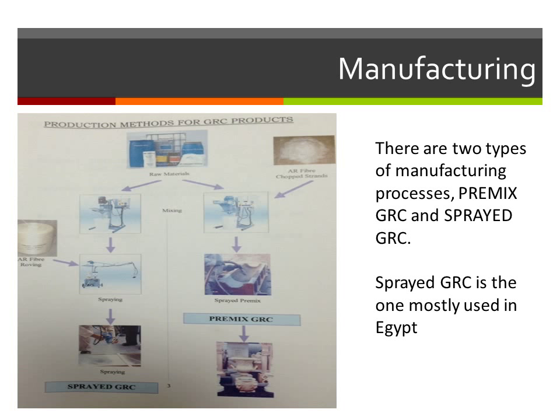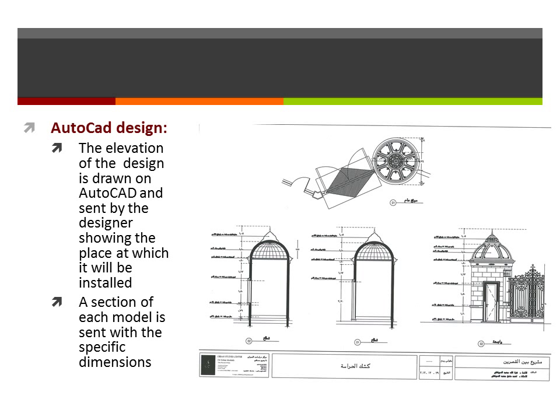Regarding the manufacturing process, there are two types: pre-mix GRC and spray GRC. Spray GRC is however the most used in Egypt. These are pictures of the AutoCAD design of a sample GRC product.